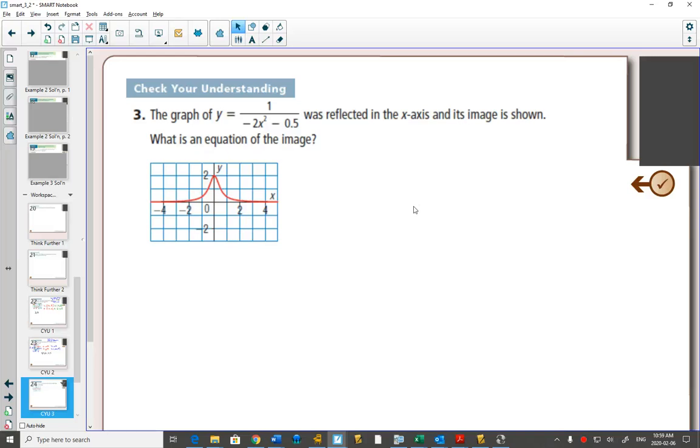The graph of y equals 1 over negative 2x squared minus 0.5 was reflected in the x-axis, and the image is shown. What we're seeing here is the image after it was reflected. We need to write an equation for that image.